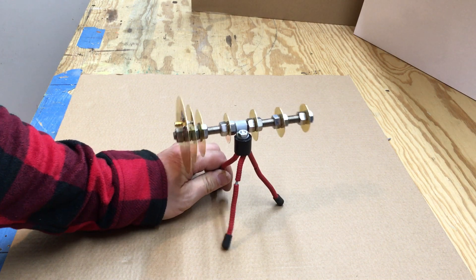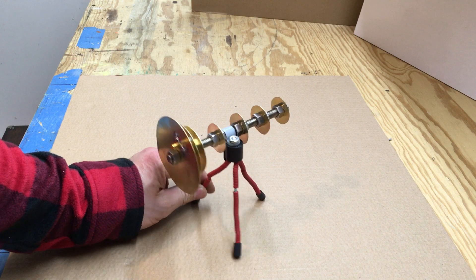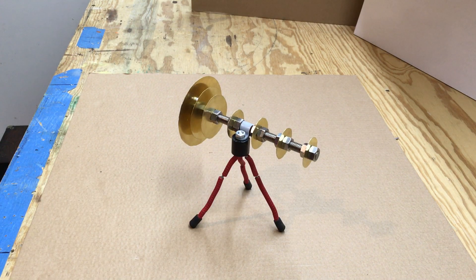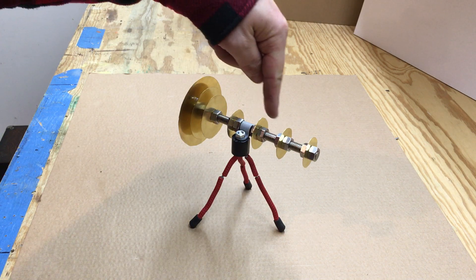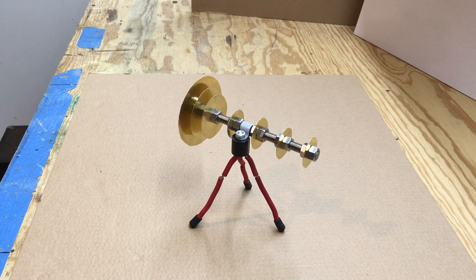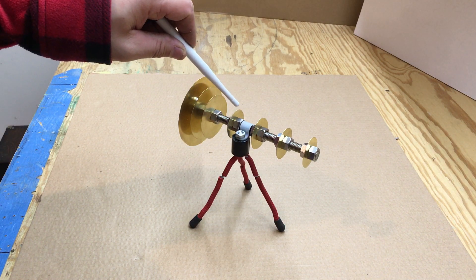But as you can see, these three circles here are 37 millimeters. This guy here is 38 millimeters.